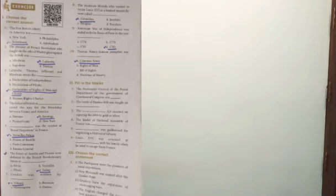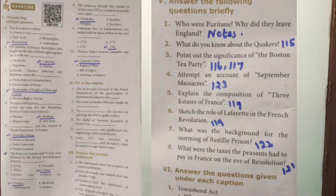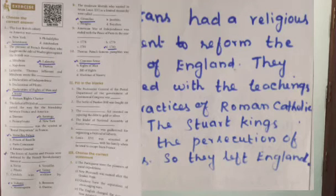Roman number 5: Answer the following questions briefly. Question 1: Who were the Puritans and why did they leave England? Puritans had a religious movement to reform the Church of England. They dispensed with the teachings and practices of the Roman Catholic Church. The strong kings ordered the persecution of Puritans, so they left England.